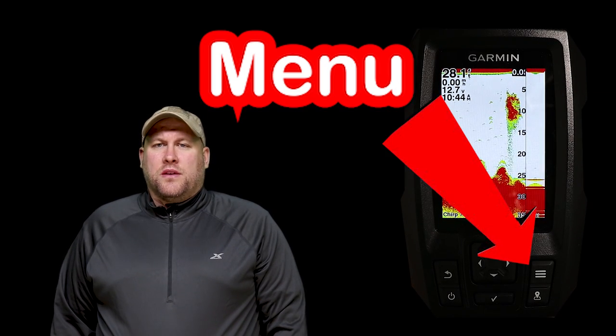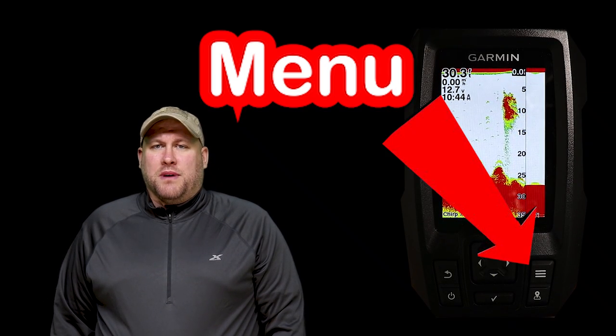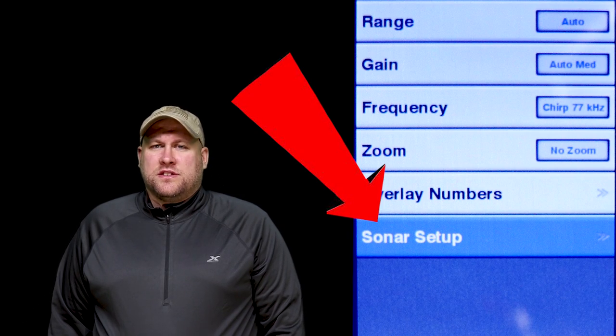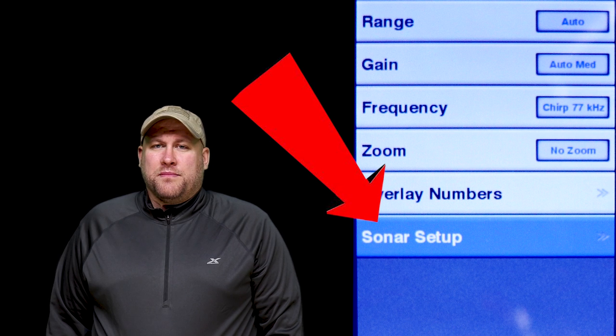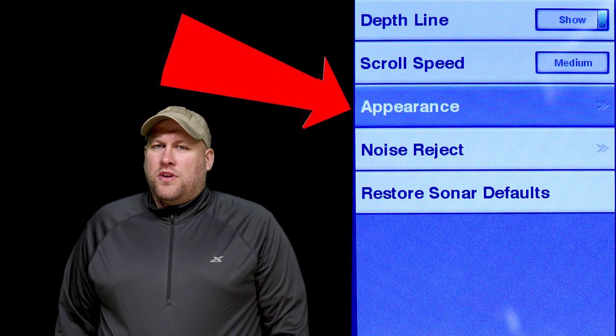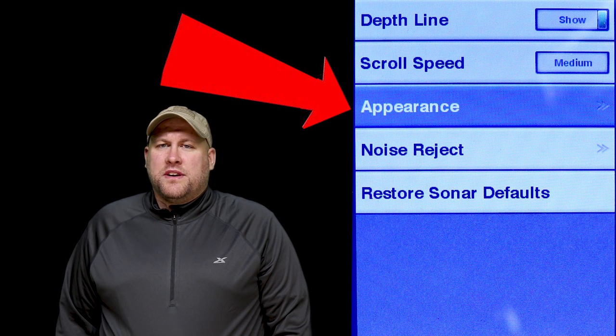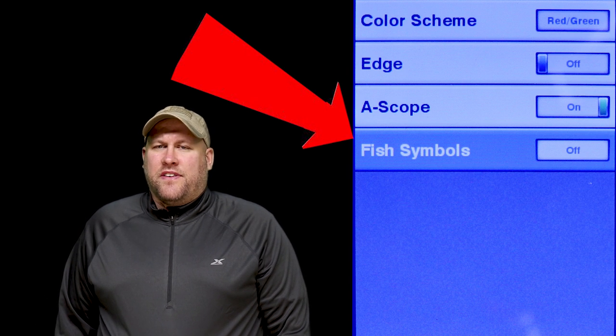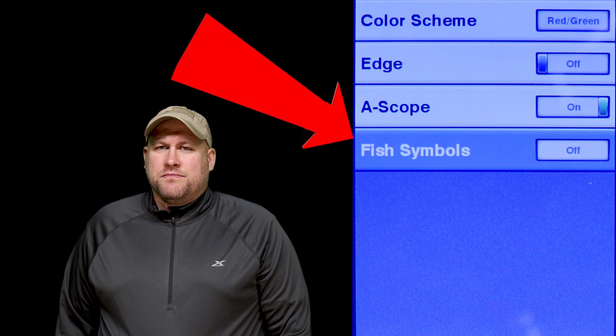To activate the Fish ID on your sonar, follow these steps. From the traditional sonar screen, hit the menu button. Next, scroll down to sonar setup. From there, scroll down to appearance and at the bottom of the screen you'll see an option for fish symbols.